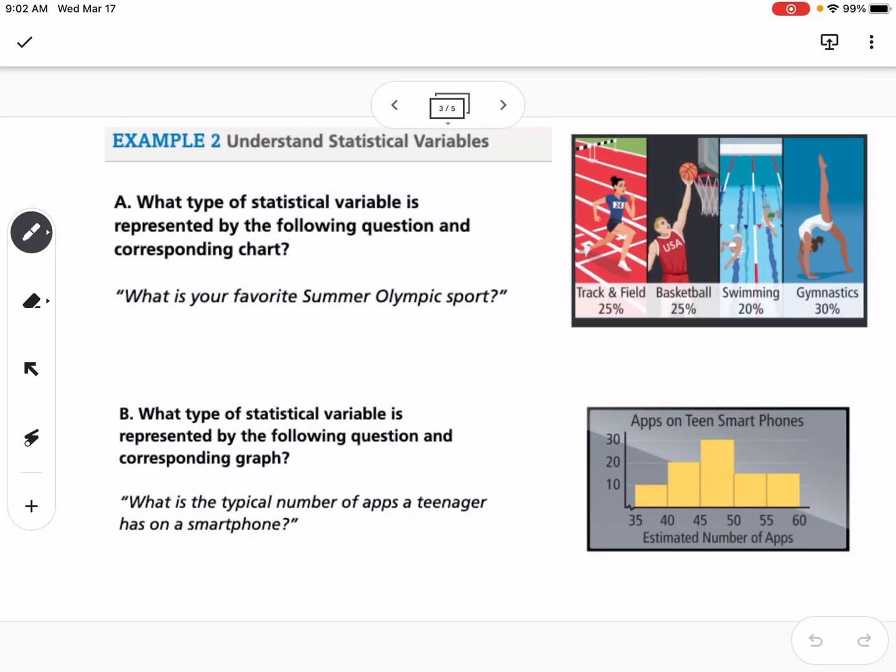Example two is talking about statistical variables. A statistical variable is something that can be measured or counted. The first one asks what type of statistical variable is represented by the following question: What is your favorite summer Olympic sport? The answers would fall into a category of specific sports. It has to be a sport that is in the summer Olympics. So this is what we call a categorical variable.